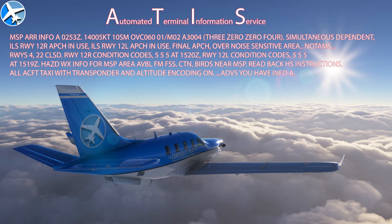The last weather report we're going to talk about is ATIS — Automated Terminal Information Service. You'll see this at towered airports. ATIS reports are made once per hour, sometimes more often if there's adverse weather and an update has to be made. Some airports have an arrival ATIS and a departure ATIS, but smaller towered airports just have ATIS serving both. These are normally made by one of the air traffic controllers, but sometimes by a computer called D-ATIS or digital ATIS.